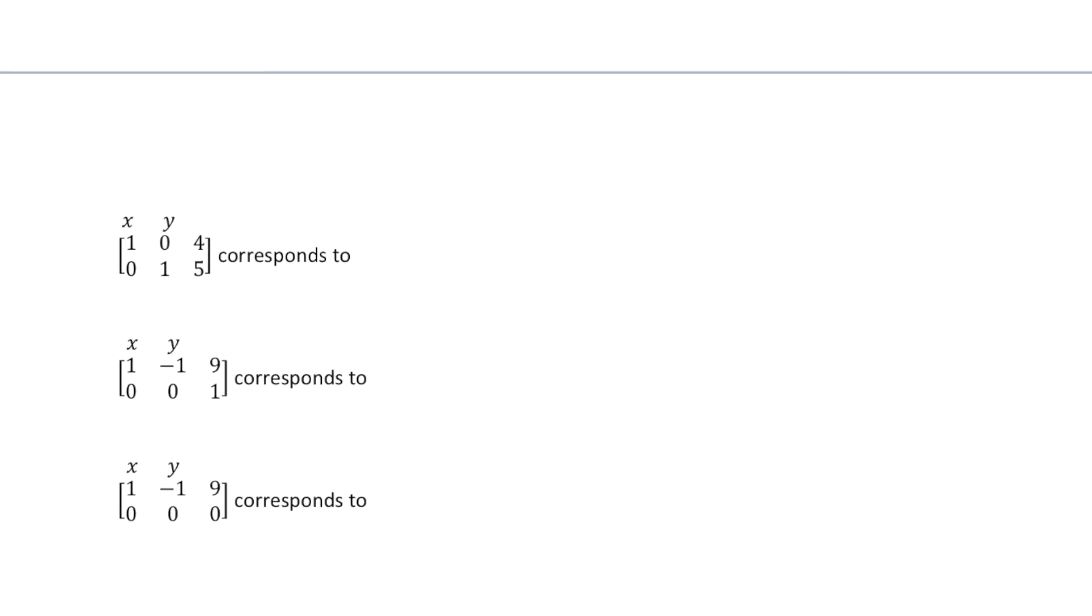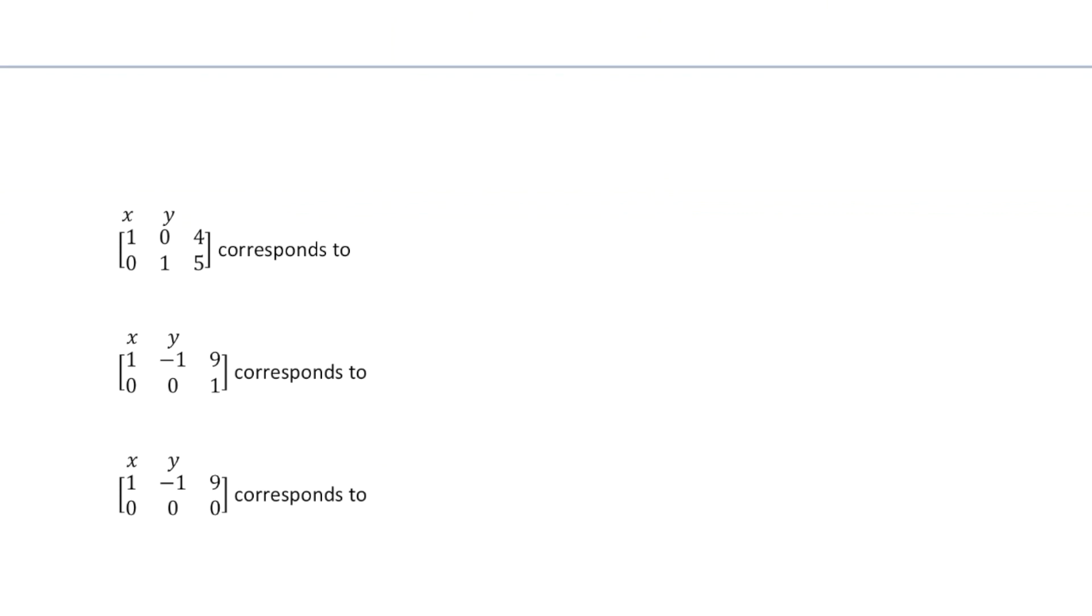Let's take a look at this one here. This looks like a nice form. What would this augmented matrix be saying? It would be saying 1x₁ plus 0y's is 4, and 0x plus 1y is equal to 5.